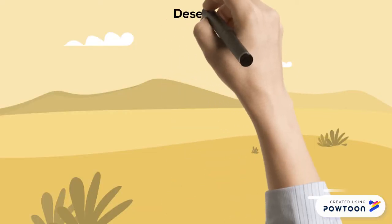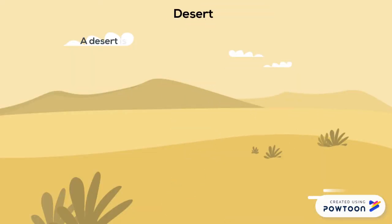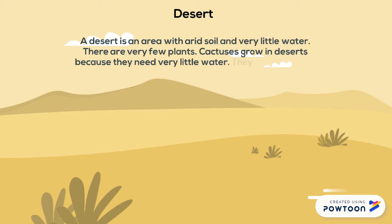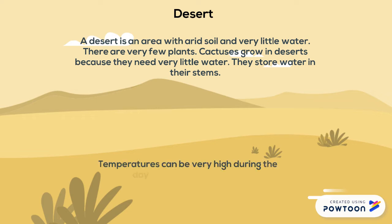Desert: a desert is an area with arid soil and very little water. There are very few plants. Cactuses grow in deserts because they need very little water. They store water in their stems.